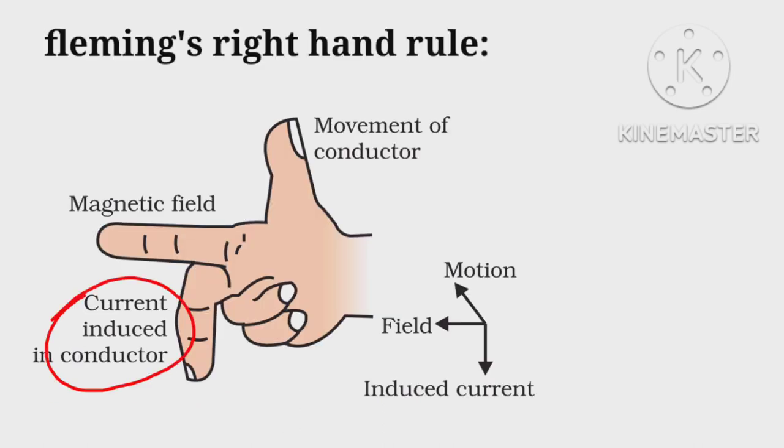The direction of induced current can be found by Fleming's right hand rule, which states: open your right hand palm, keeping the forefinger toward the magnetic field and thumb toward motion. Then the middle finger will show the direction of induced current if all three fingers are perpendicular to each other.